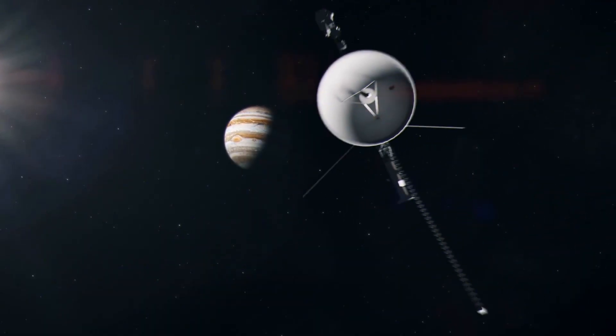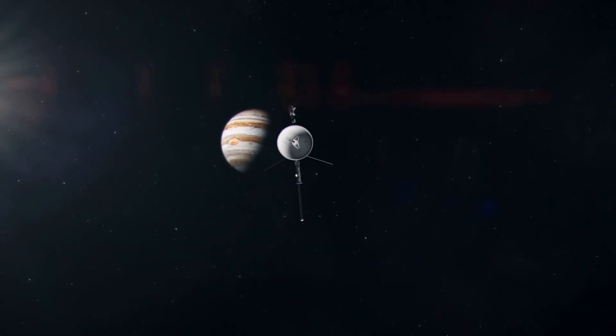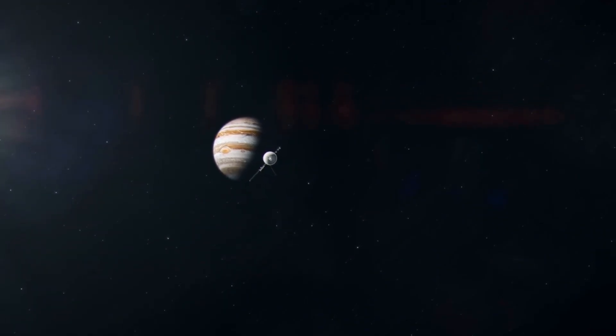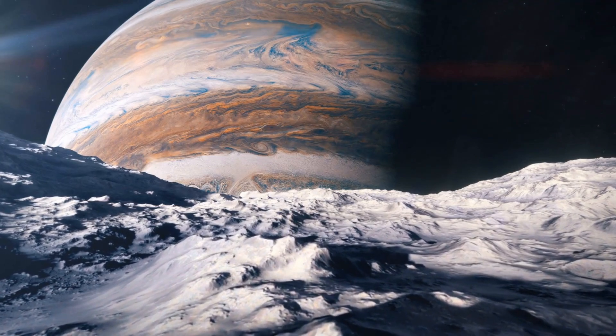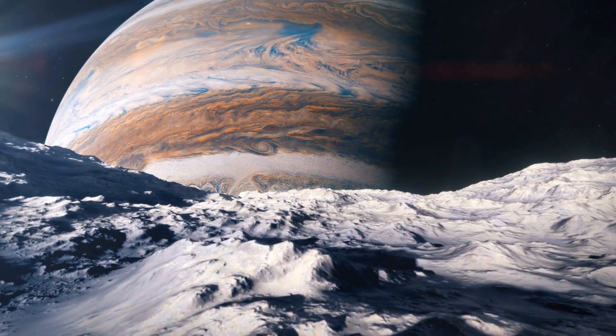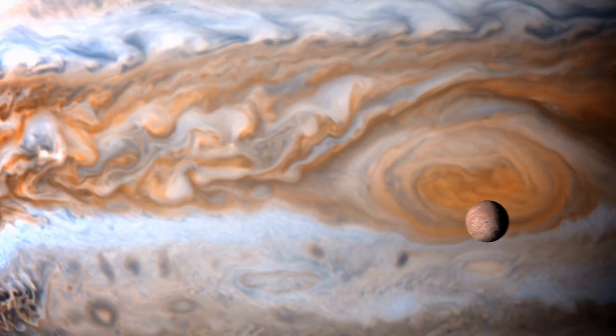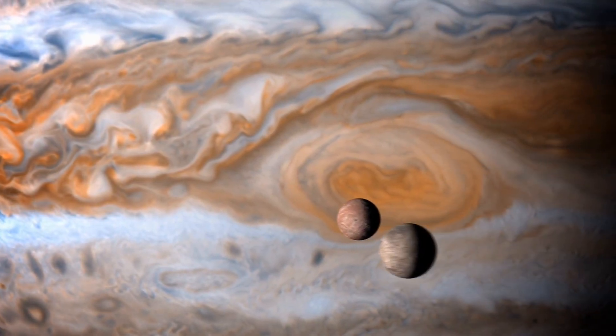In March of 1979, as it approached Jupiter, Voyager 1's cameras unveiled what no eye had ever seen before. Majestic cloud bands swirling with colossal storms, a faint ring system and the iconic Great Red Spot, an eternal tempest larger than Earth.